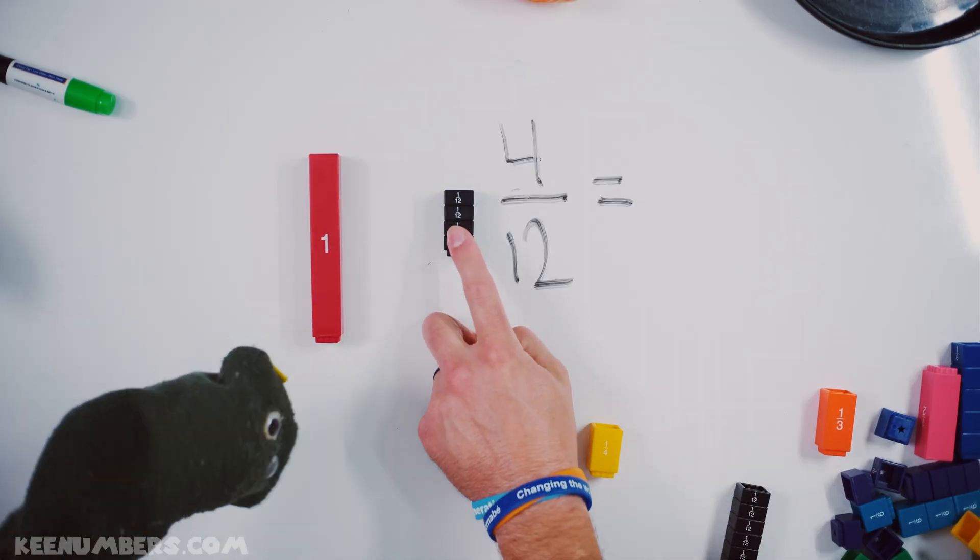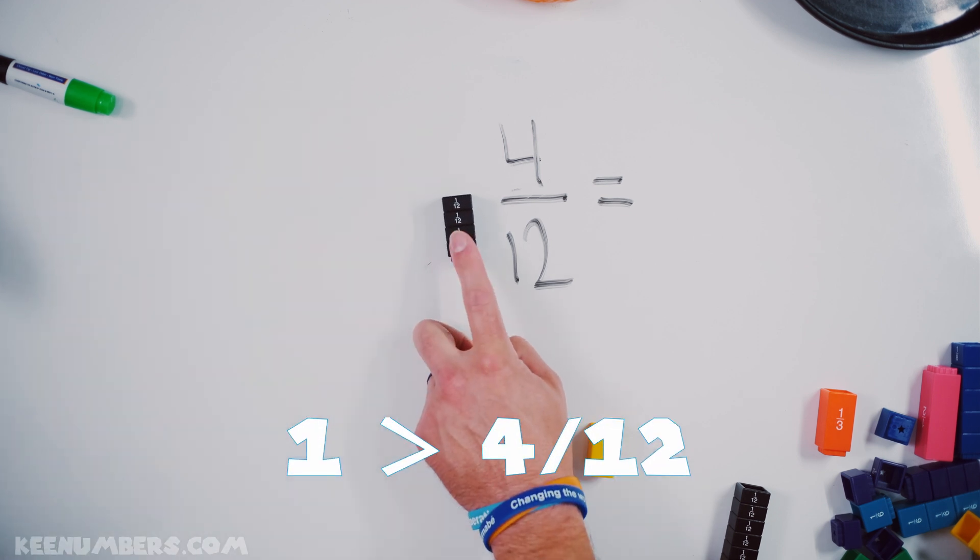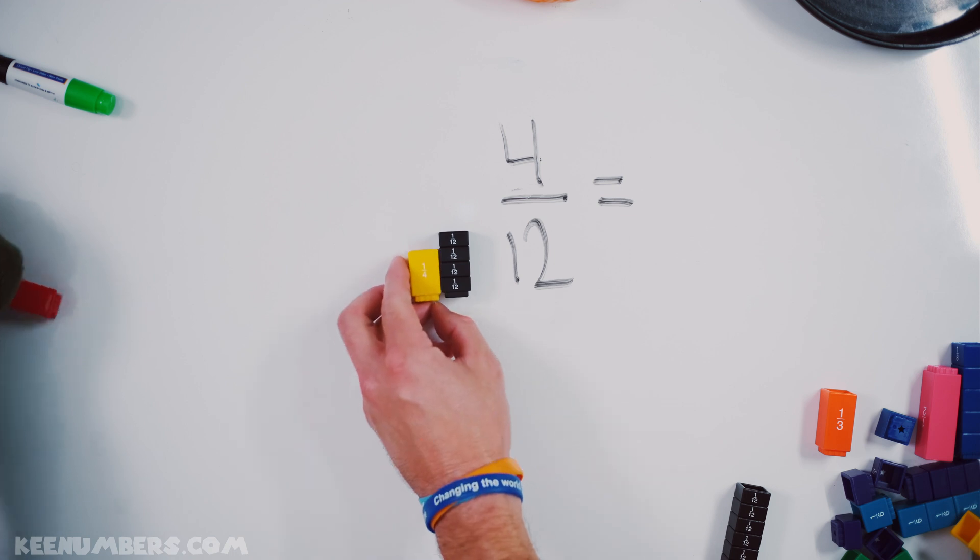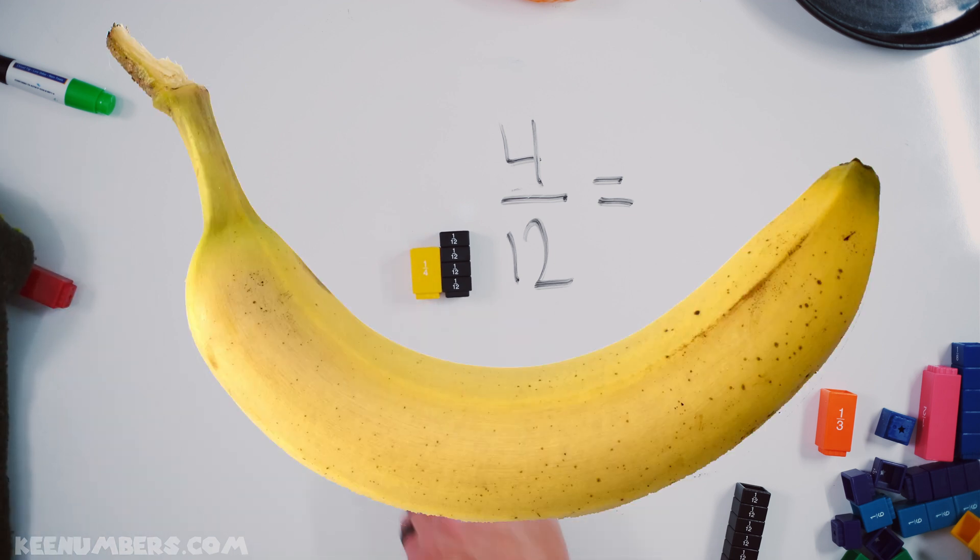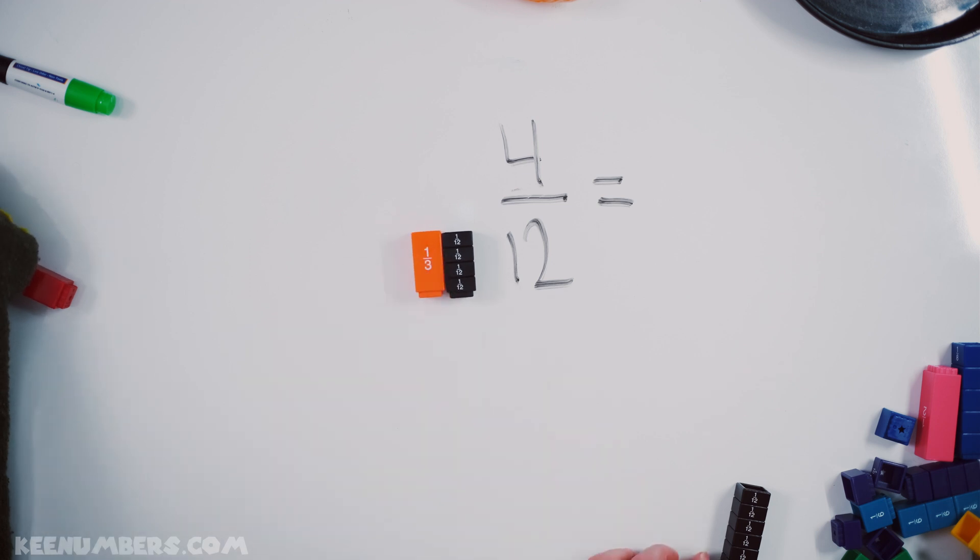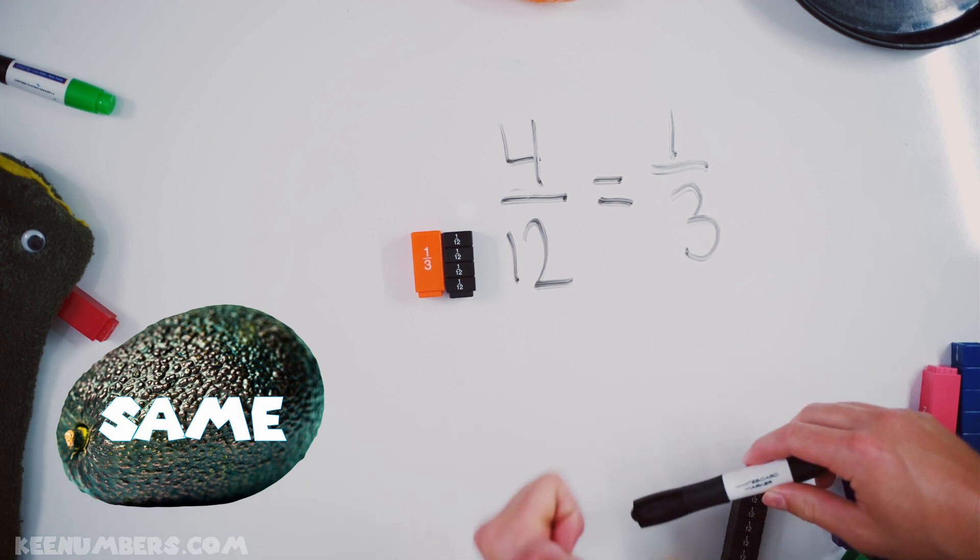What about four-twelfths? Can we simplify? Oh, it's the greater gator. He's eating the one! Because it's bigger than four-twelfths. Now, four-twelfths does simplify. Is it one-quarter? No! One-quarter is too small. Is it one-third? Ding, ding, ding, ding, ding! Four-twelfths simplifies. It's one-third. Yeah!